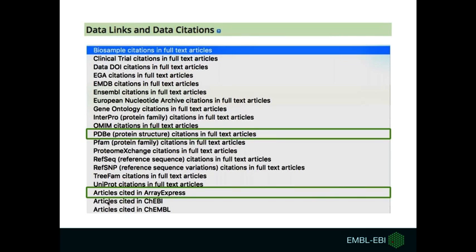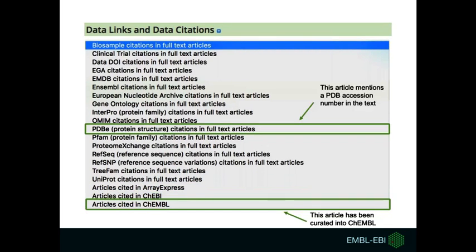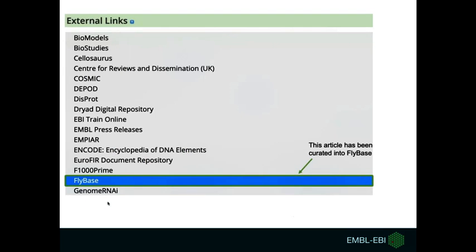You can use the option 'Data Links and Data Citations' in the advanced search to select articles that have data from a specific database. For example, here you can select to get articles mentioning PDB accession numbers in the texts. You can also select different providers by using the option 'External Links' in the advanced search page — for example, you can get links to data statements in FlyBase only, as you can see in this slide.